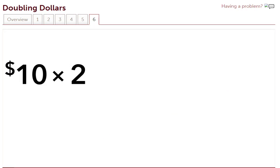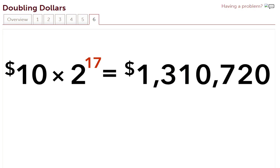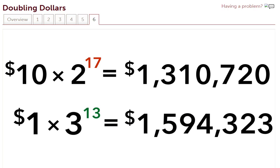If we start with $10 and double it every day, it takes us 17 days to reach a million dollars. But tripling just $1 only took us 13 days! You can see how much more powerful it is to triple rather than double.